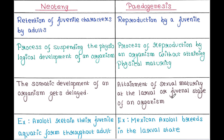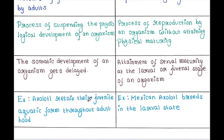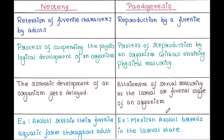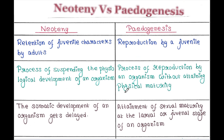An example of Neoteny is the Axolotl — they retain their juvenile aquatic form throughout adulthood. And an example of Paedogenesis is also the Mexican Axolotl — they breed in the larval state. So these are some basic differences between Neoteny and Paedogenesis.